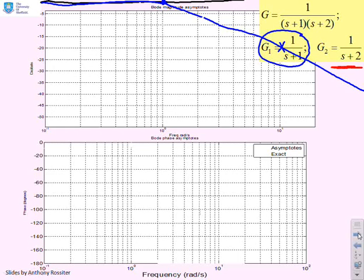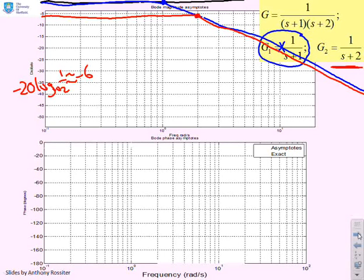What about G2 is 1 over s plus 2? Well, if you do the low frequency gain, you need to do minus 20 log to the base 10 of 1 over 2, which is approximately minus 6. So this one's going to start at minus 6. And it's going to stay at minus 6 until we get to a corner frequency of 2. And once we get to a corner frequency of 2, it also will follow a slope of minus 20 decibels per decade.